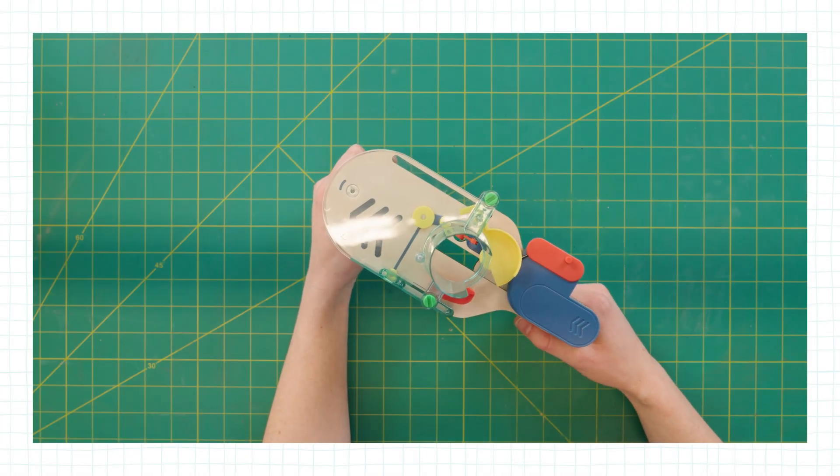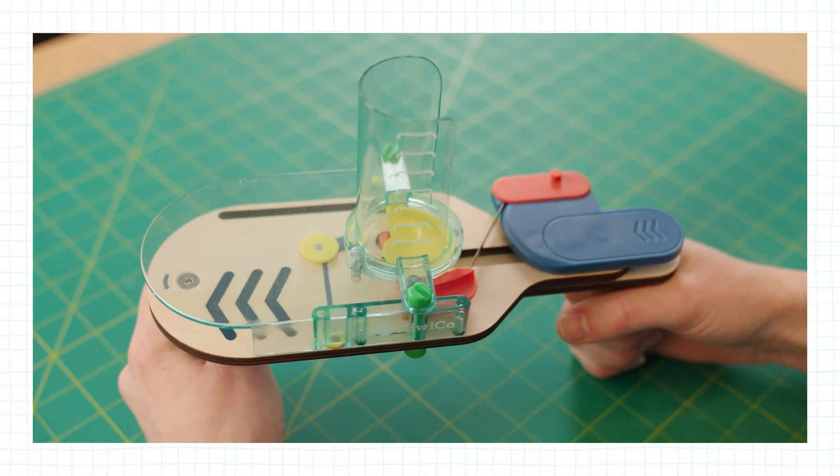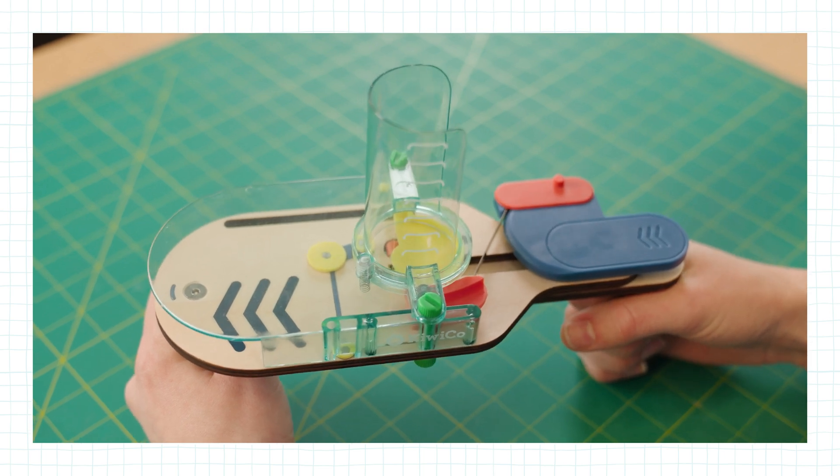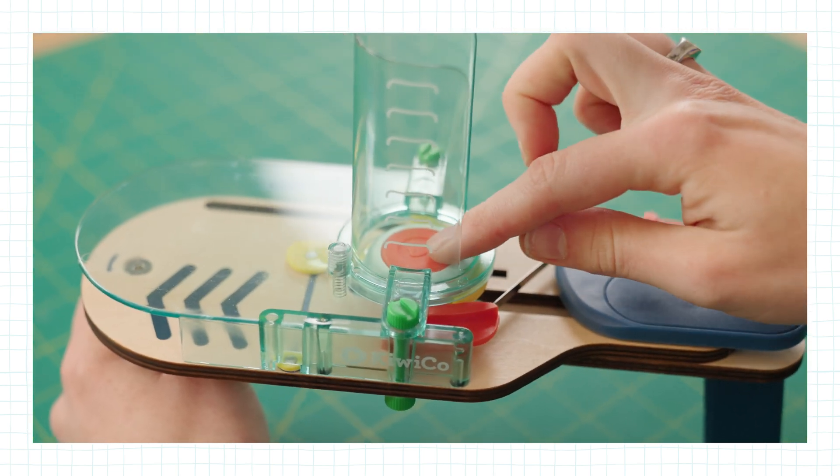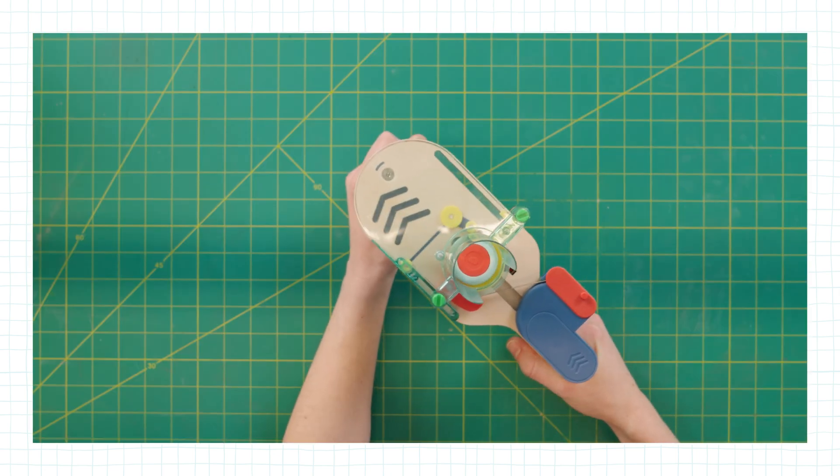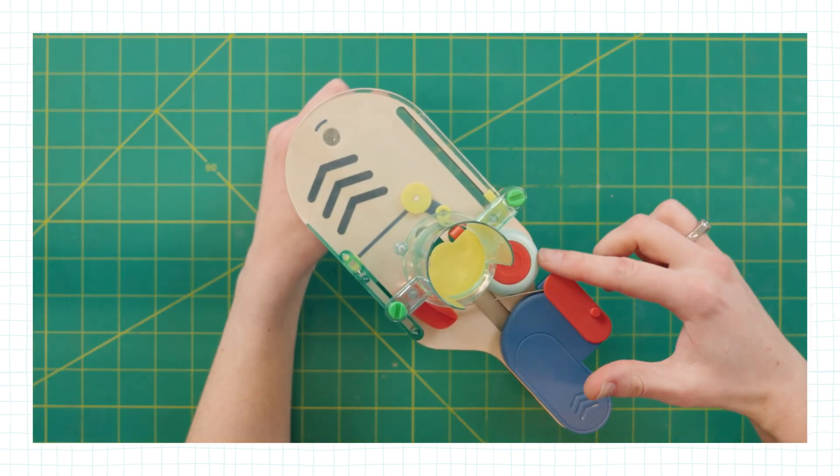If you pull the unit all the way back and you're not able to push it forward, it's working correctly. What's happening is the disc is either not loaded or not loaded correctly. You're going to want to make sure that there's a disc loaded under the yellow part and centered under the tube.